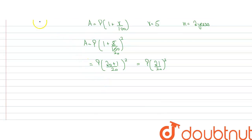So now we know that amount value is equal to P into 21 by 20 whole square. Now we know that amount minus principal is equal to compound interest.